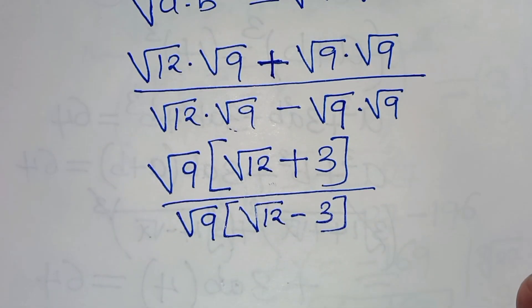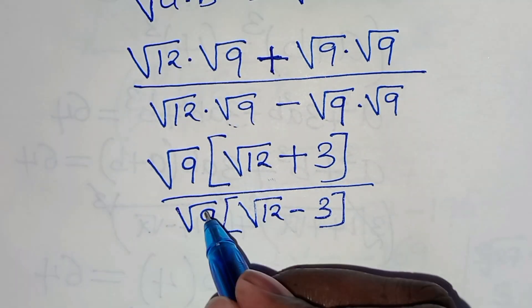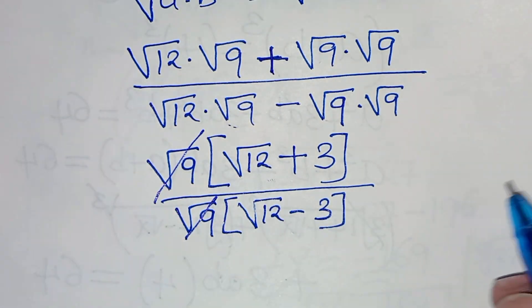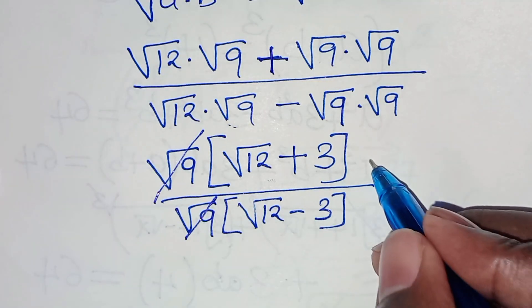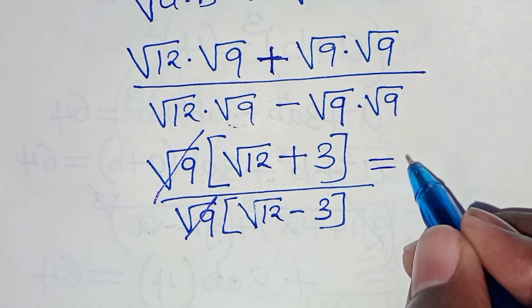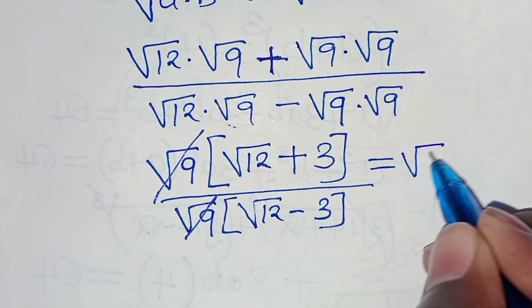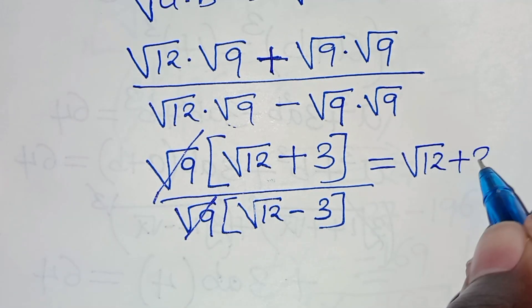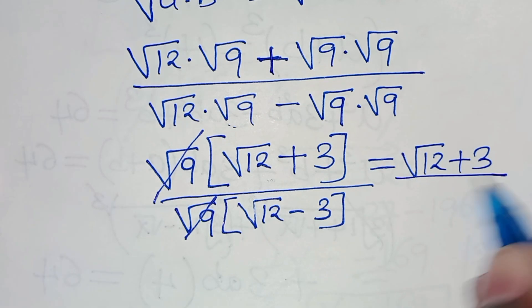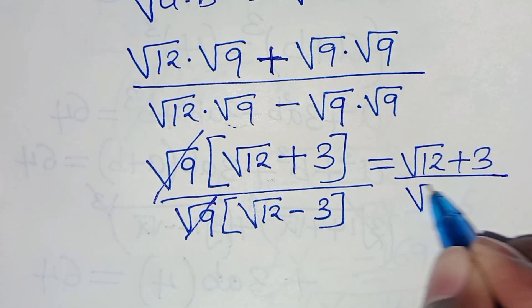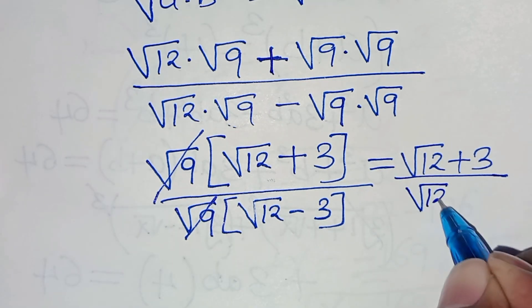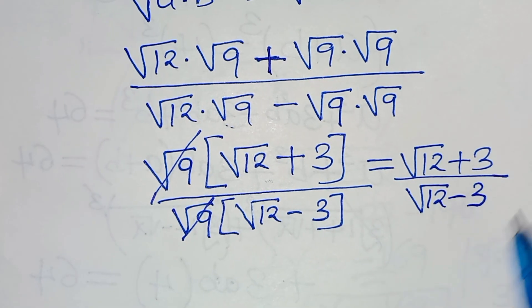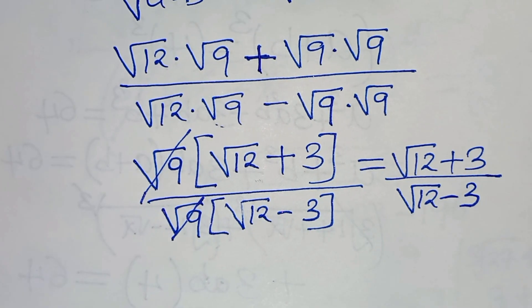The next step is to simplify: square root of 9 and square root of 9 cancel, so that we have square root of 12 plus 3, divided by square root of 12 minus 3.